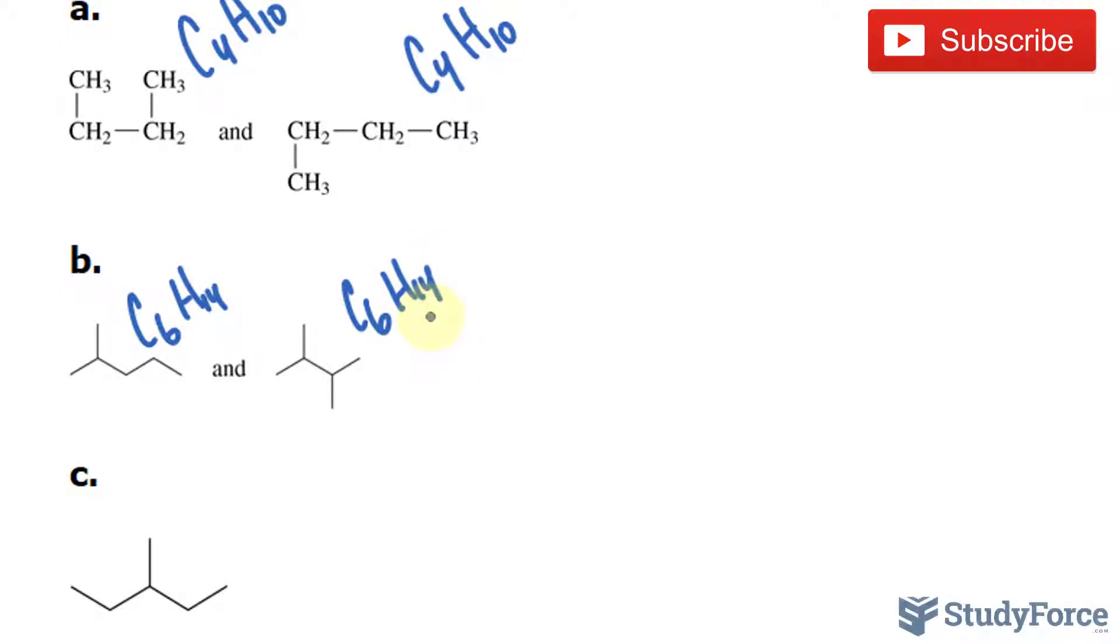Unlike before, while the molecular formula is the same, where the carbons are branching are in different locations. Like this part right here is the same, but these two carbons are not in the same place as the other. So these are structural isomers.